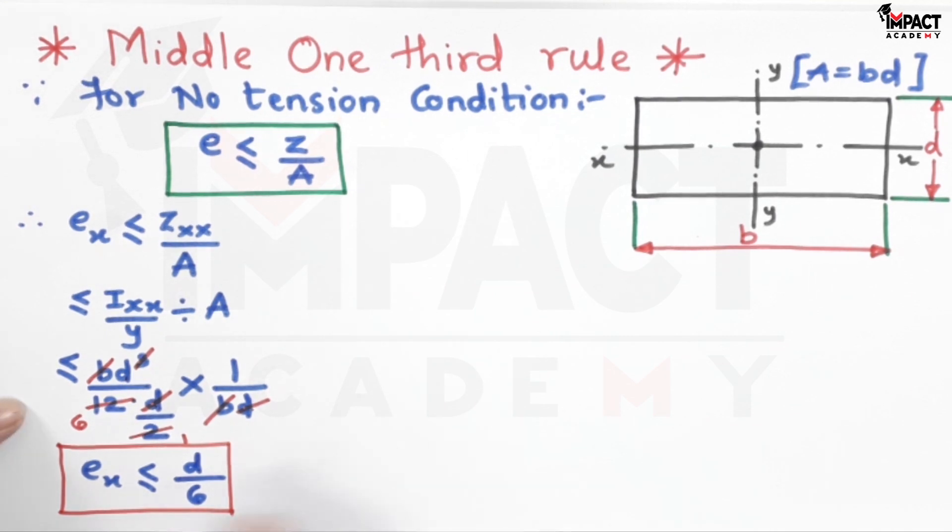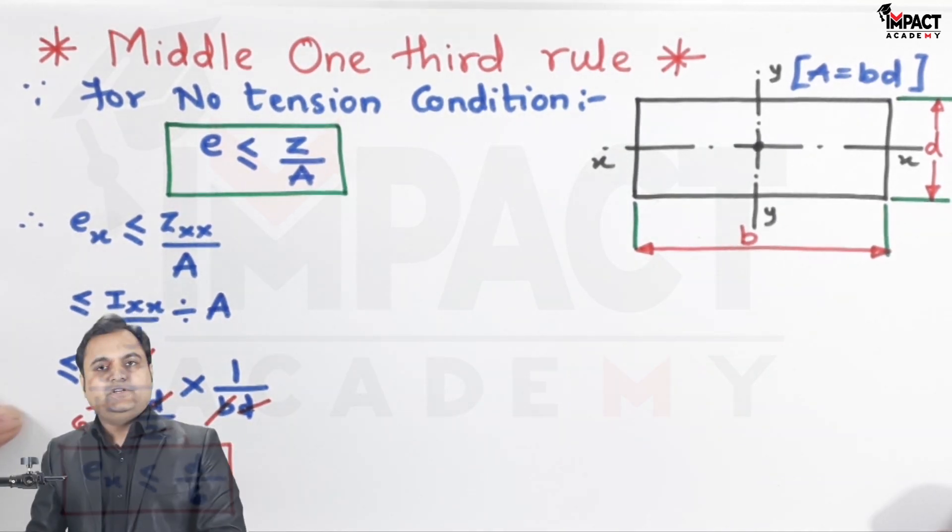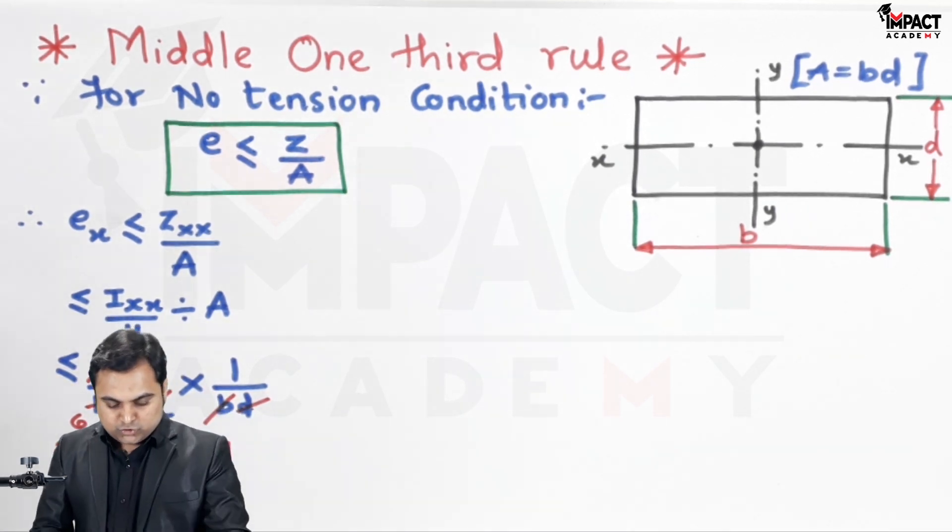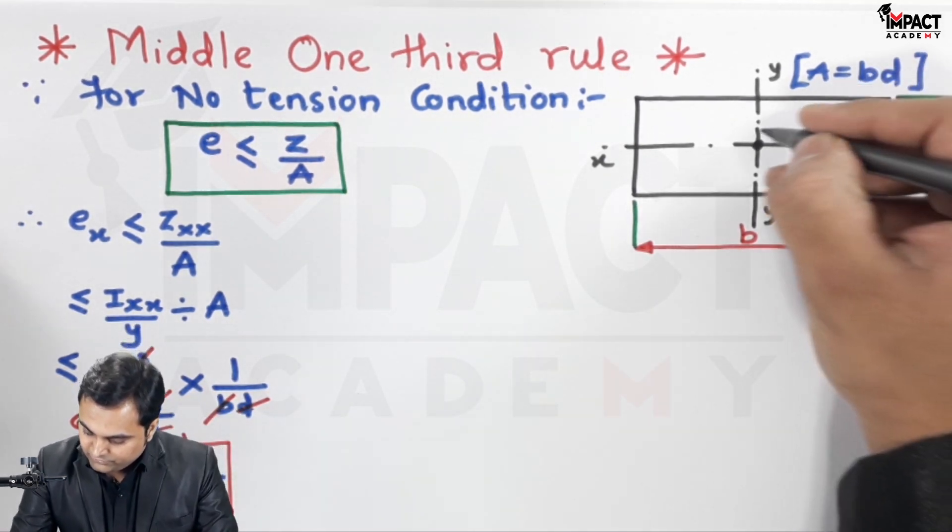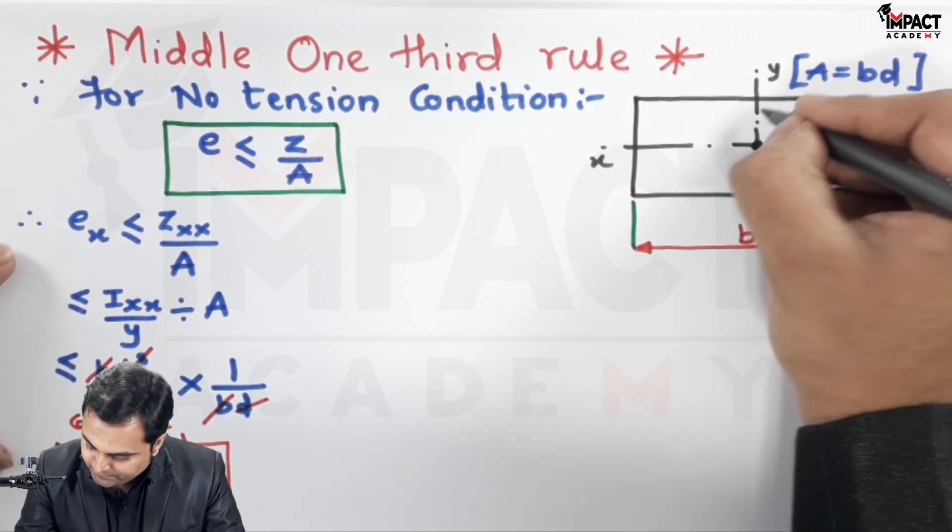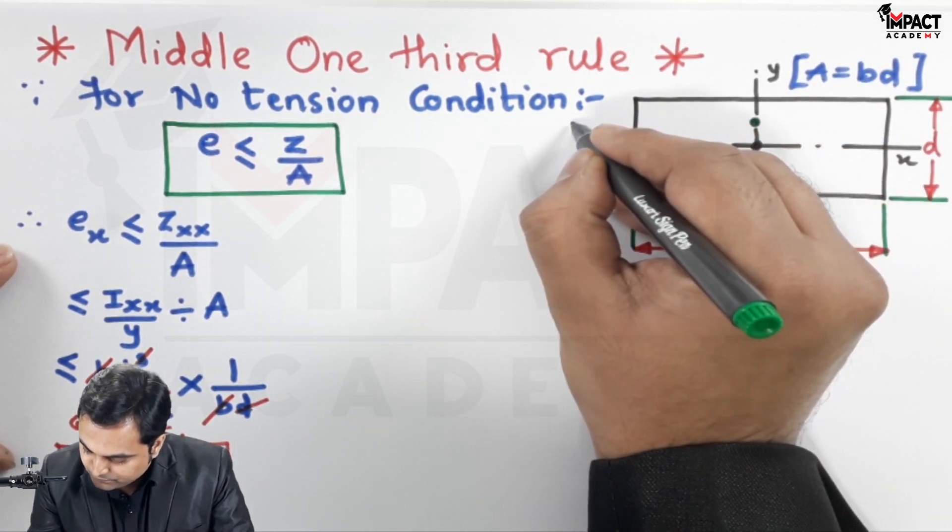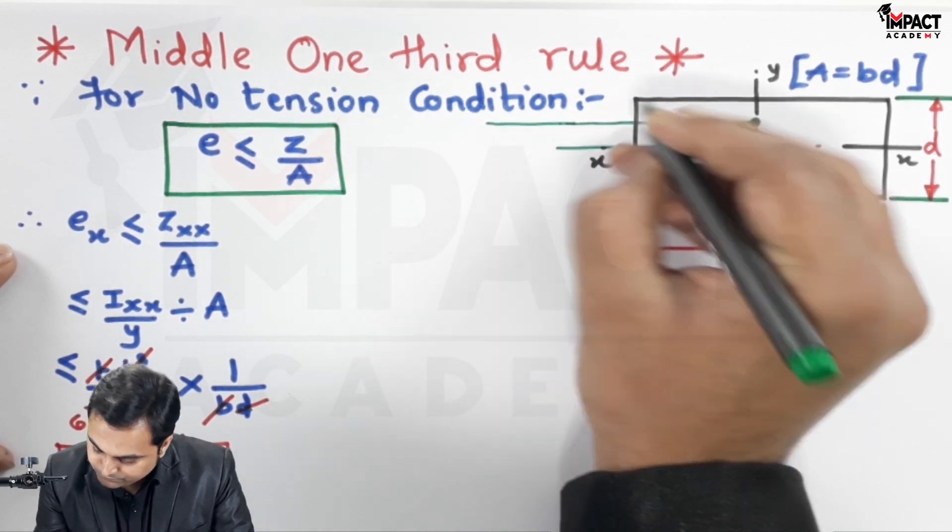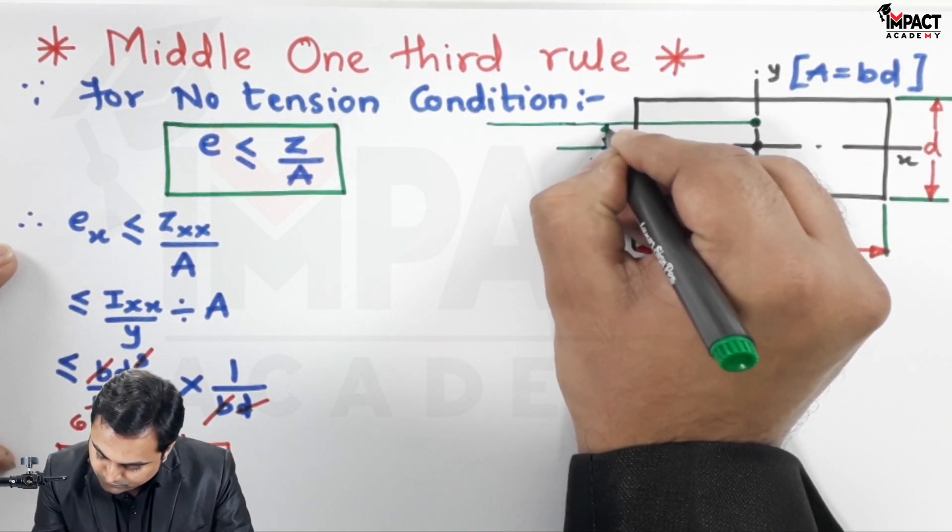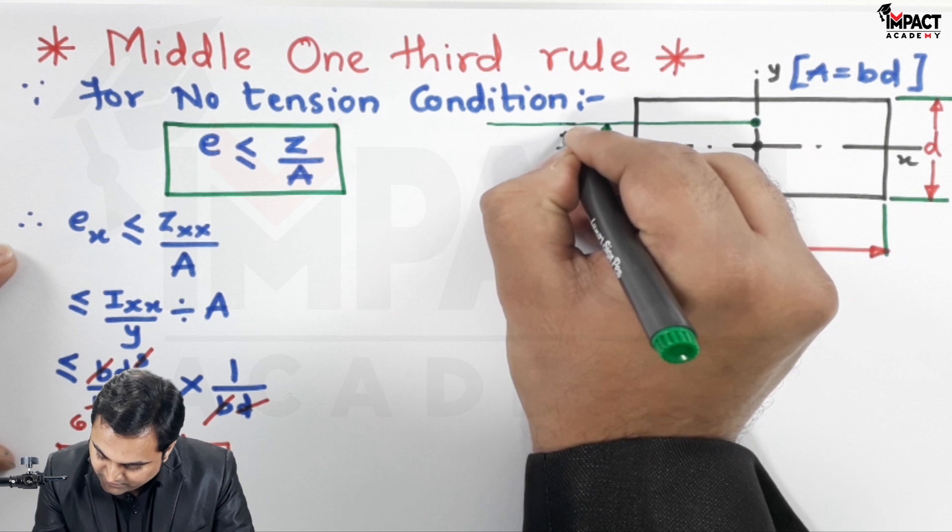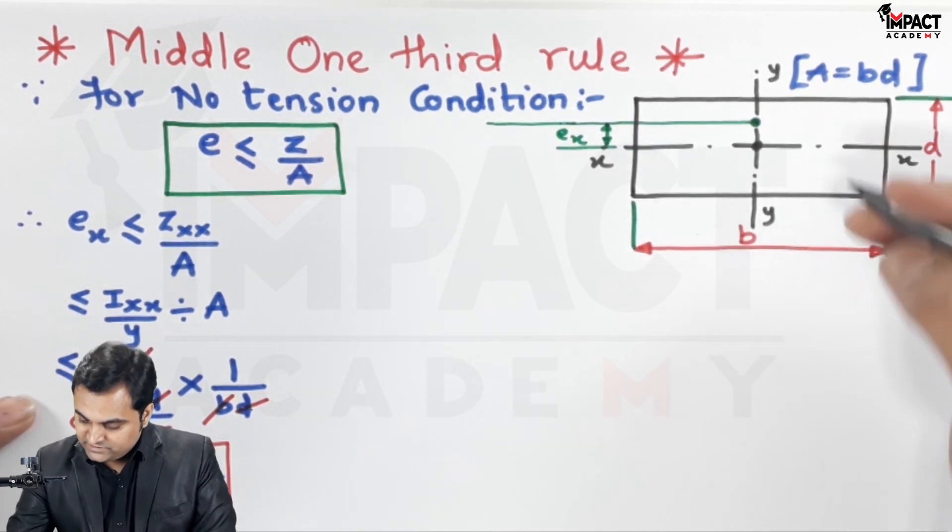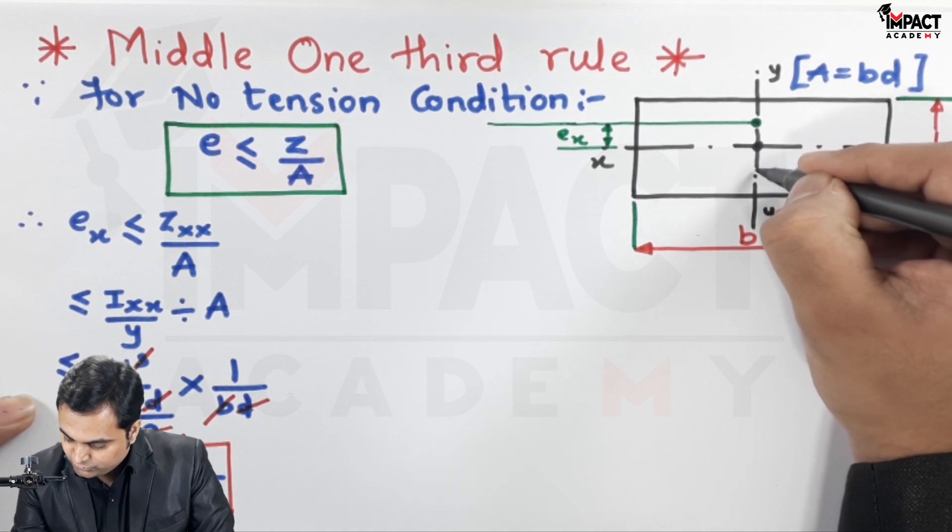Now e_x means eccentricity with respect to x-axis, that is we are measuring the distance from x-axis. So when we measure it from the x-axis onto one side, this distance is e_x which is d/6.